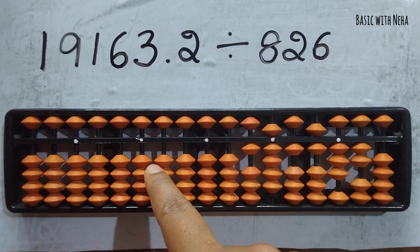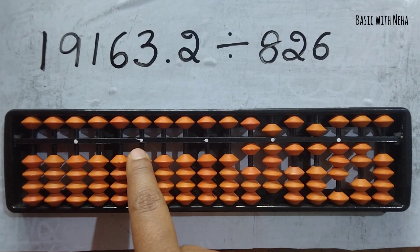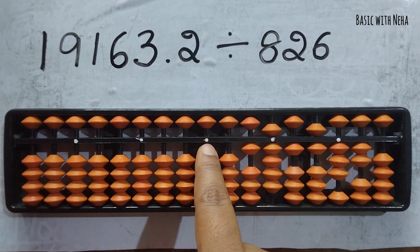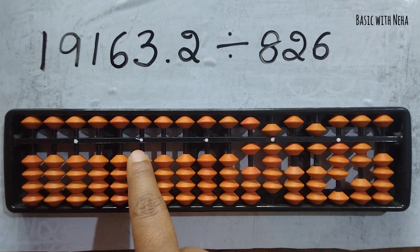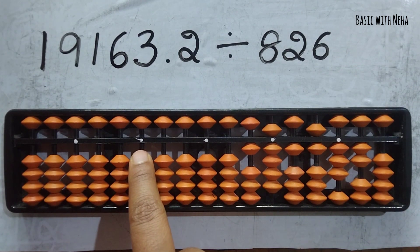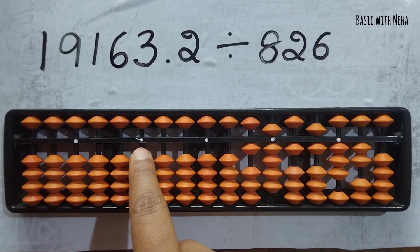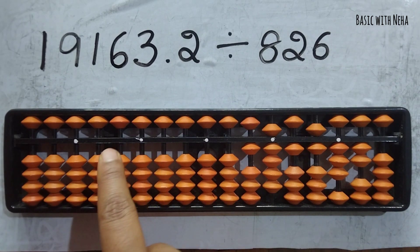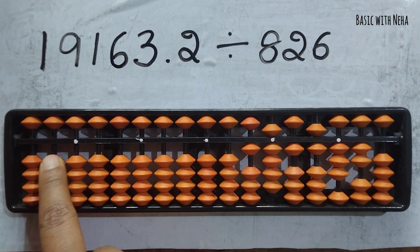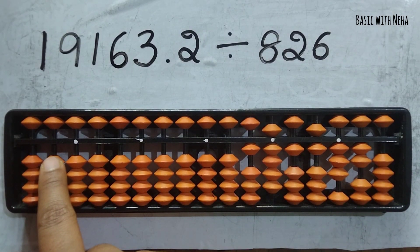Now I'm going to start performing the calculation. This will be my one's place, my house pointer one's rod. The number of digits before the decimal place is the number of rods I should consider. There are five numbers, so fifth rod: one, two, three, four, five.